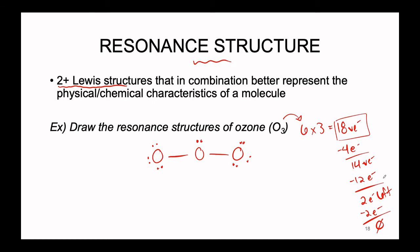As a last check, we double-check the octet count on each atom. The oxygen on the left has eight electrons, the oxygen on the right has eight electrons, but the oxygen in the center only has six — it does not have a complete octet. So we're going to have to pull one electron pair from the terminal oxygens. The problem is we have two options: we could pull an electron pair from the oxygen on the left, or from the oxygen on the right. Both options are equally valid and equally likely.